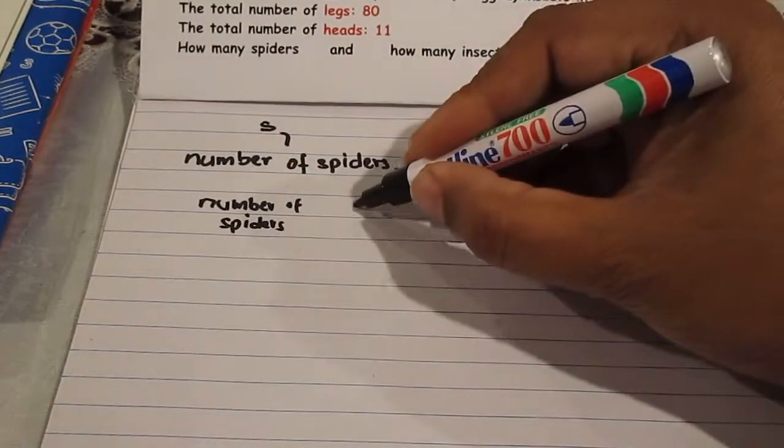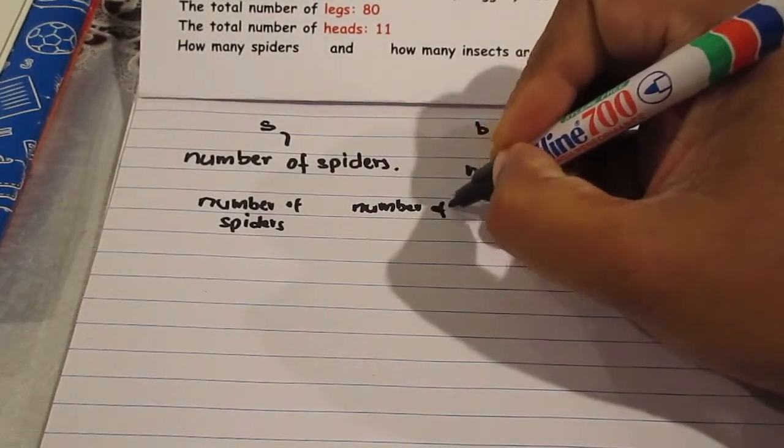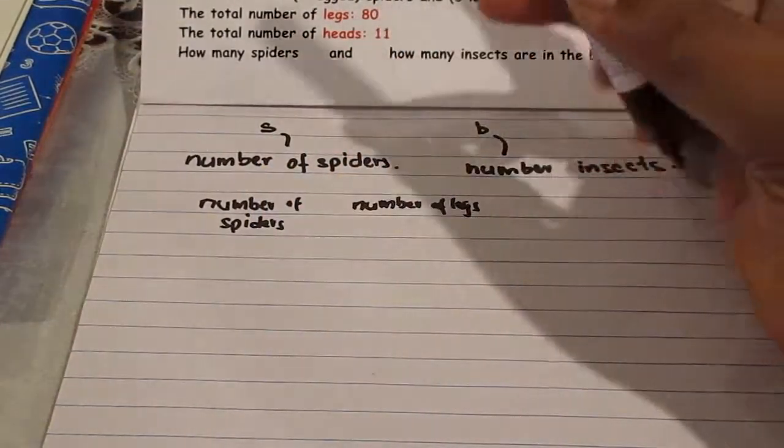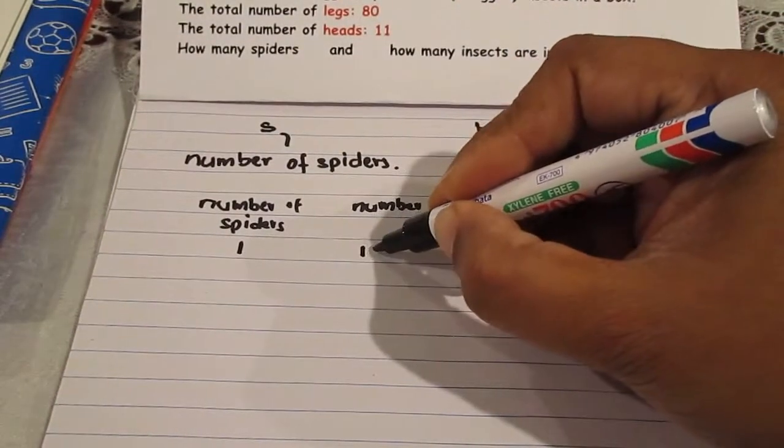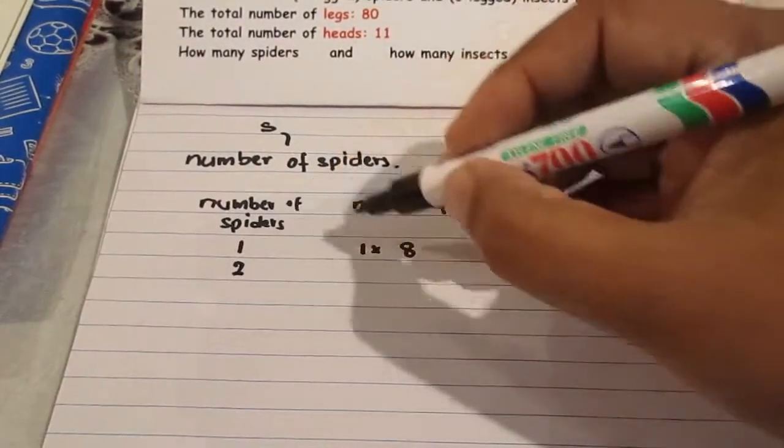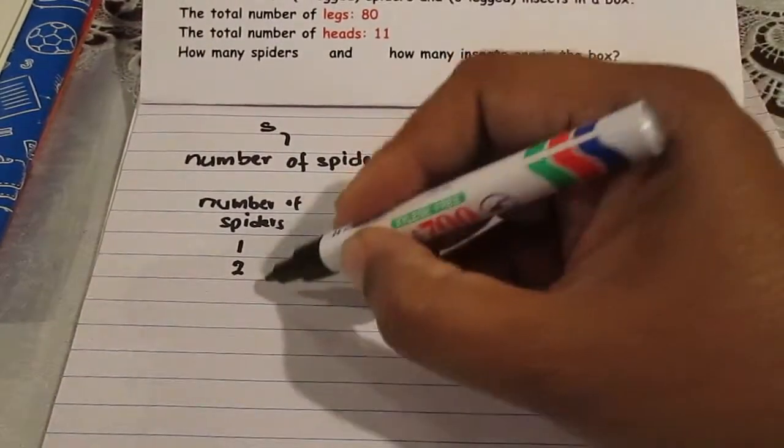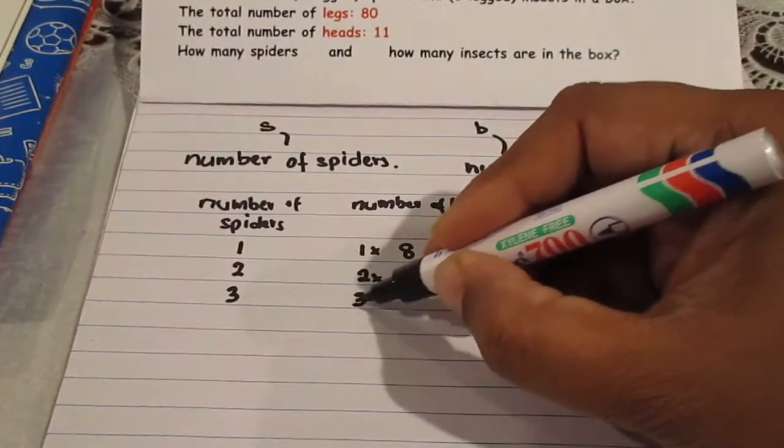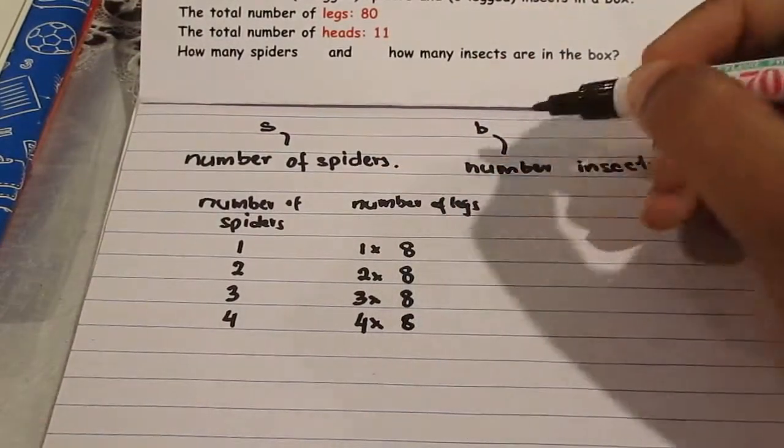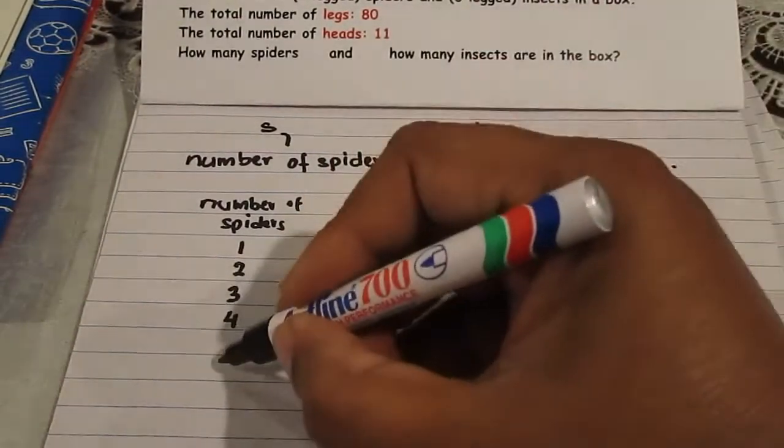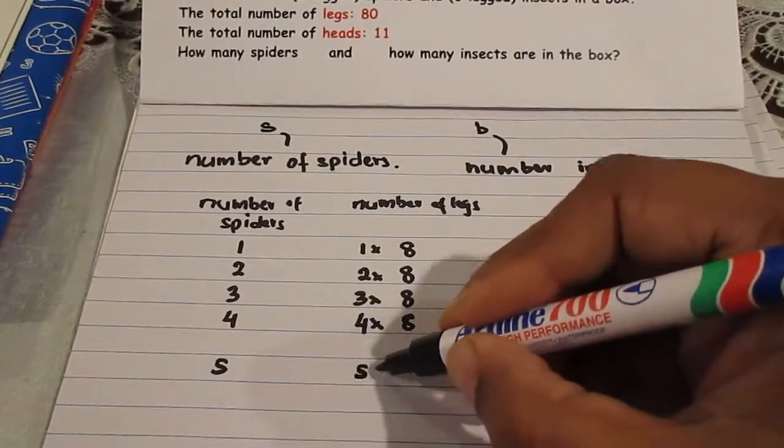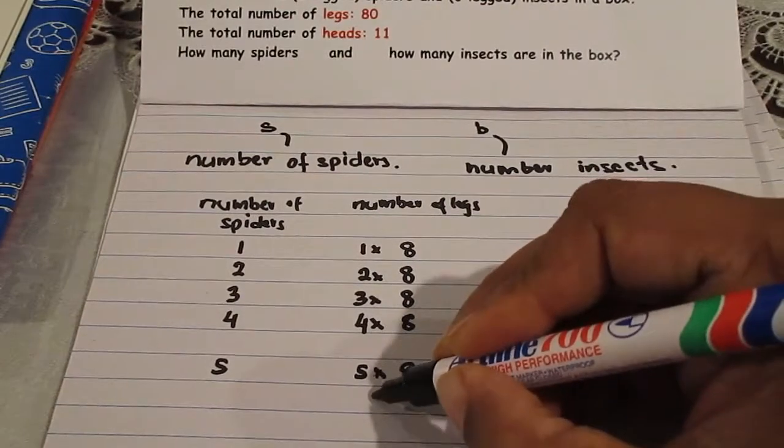Now s would be in this column. For example, one spider will have one into eight legs. There's a reason why I write this one. Two spiders will have two into eight legs. Three spiders will have three into eight legs. Four spiders will have four into eight legs. That's clear, right? So s spiders, this is the number of spiders, will have s into eight legs. This can also be written as 8s.